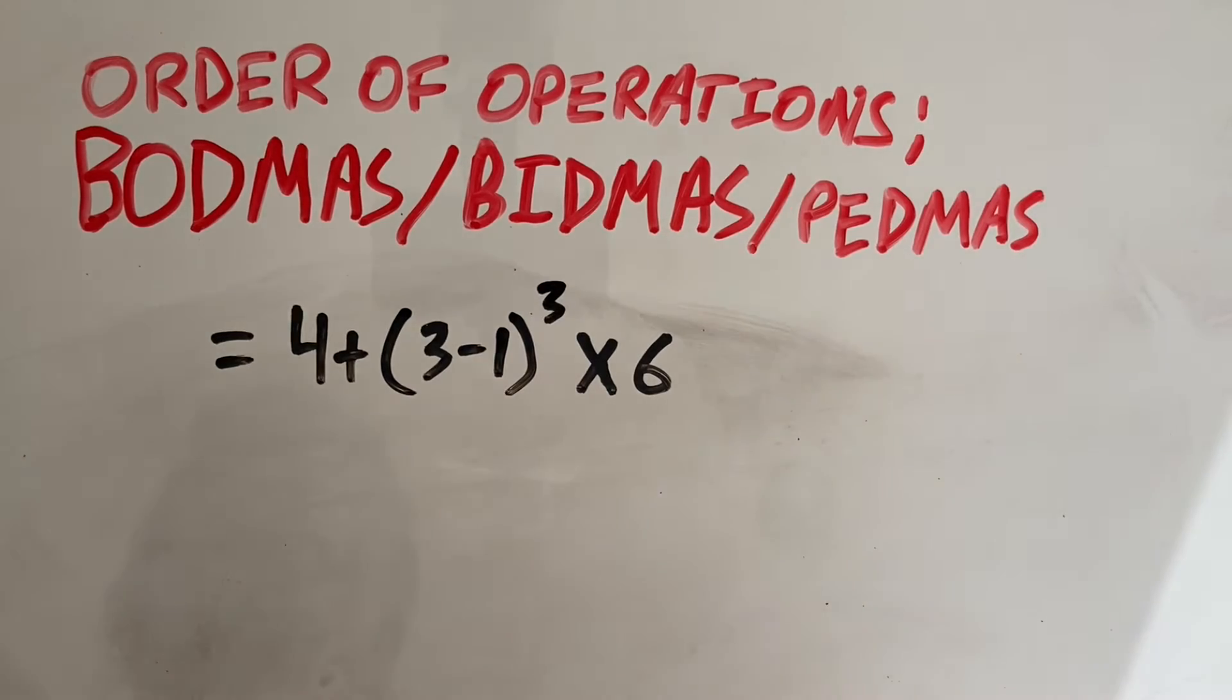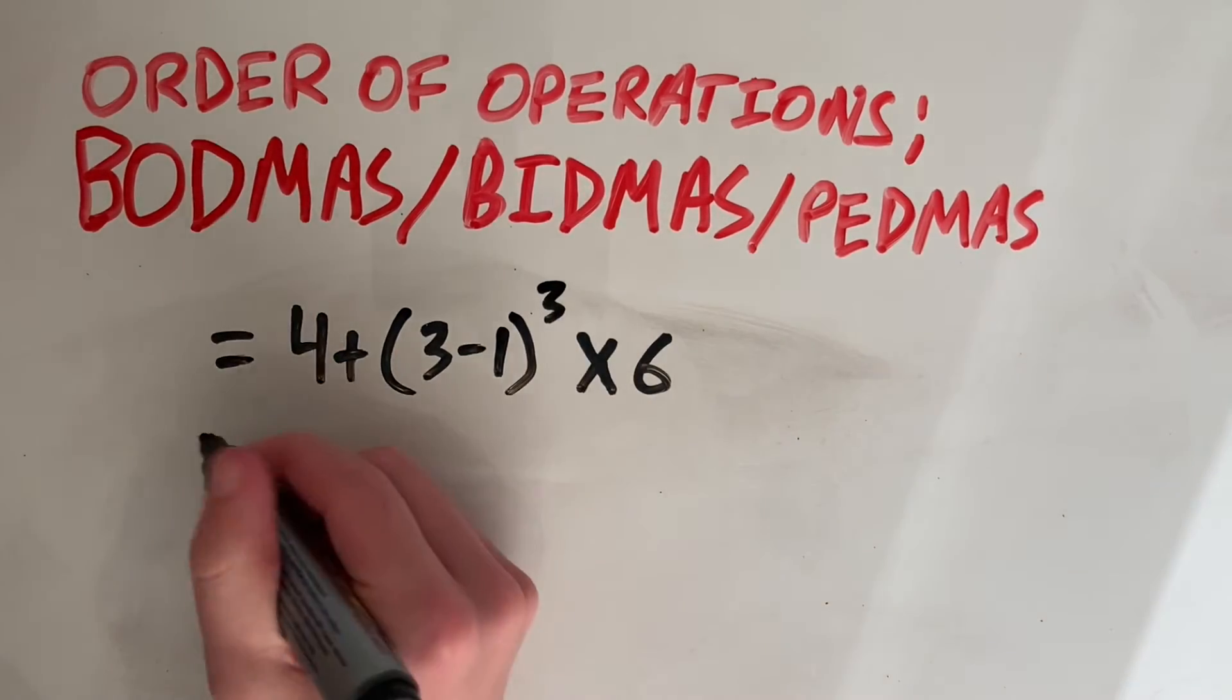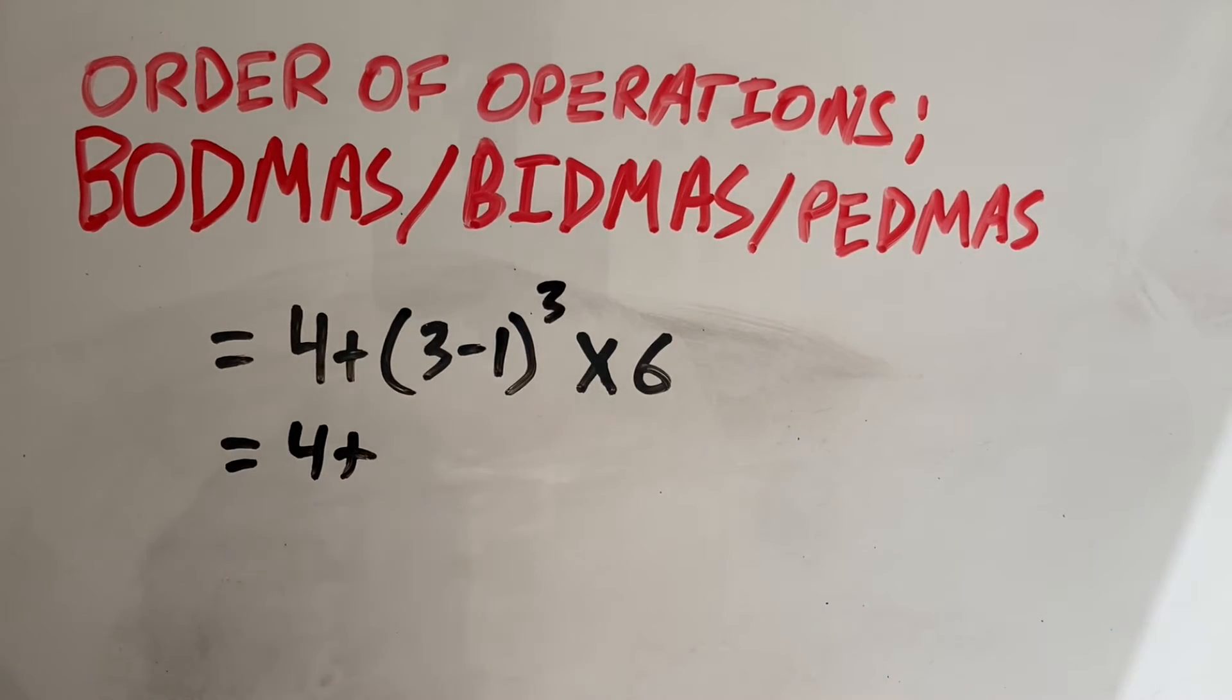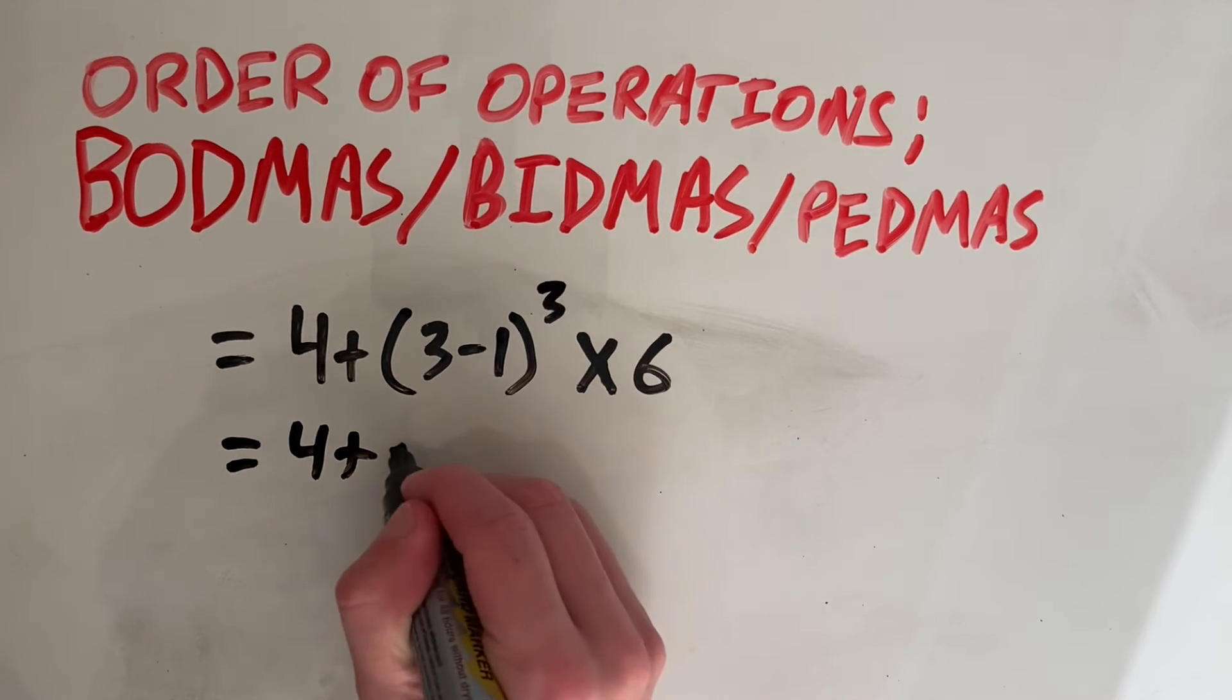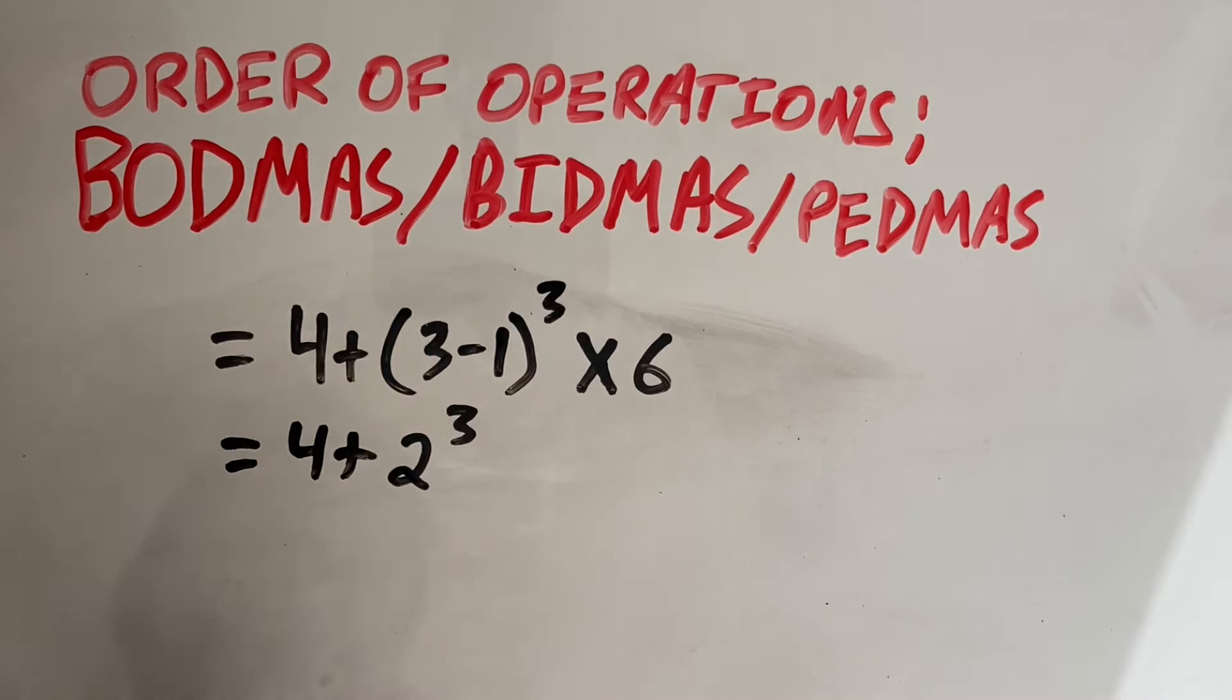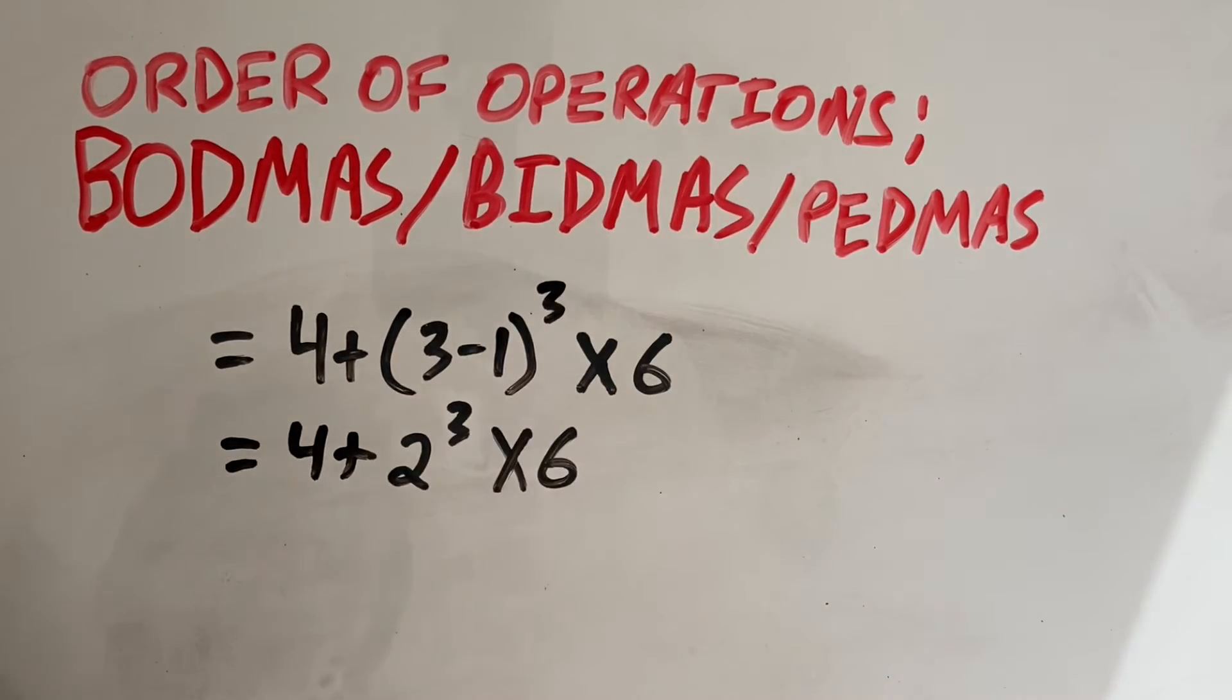So we look if we have any brackets. And yes, we do. We have brackets here. So we do what's inside the brackets first. So everything else will stay the same. And we do what's inside the brackets. So 3 minus 1. That's 2. And then we'll keep our exponent or indice or order. And everything else stays the same.